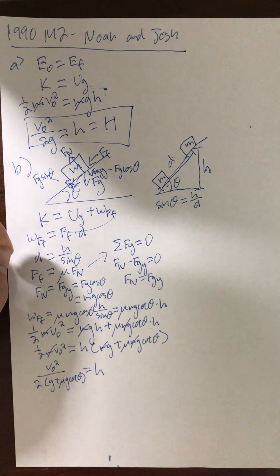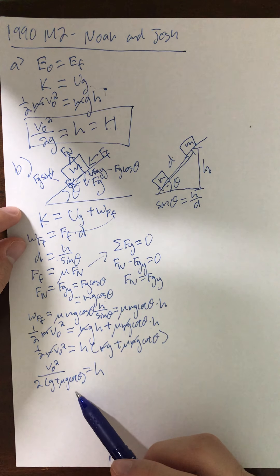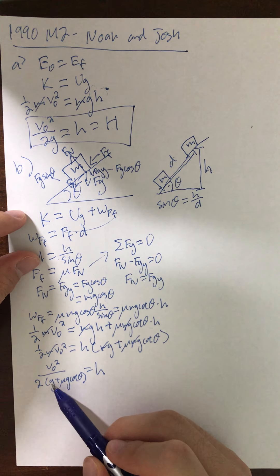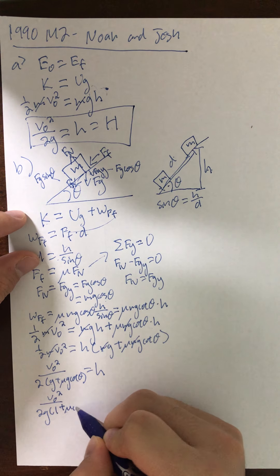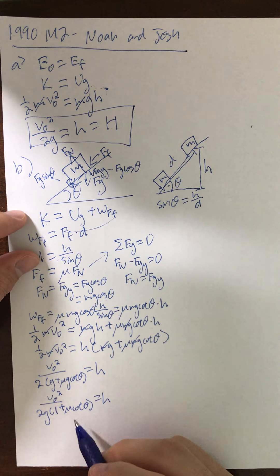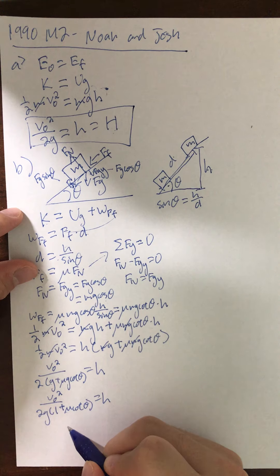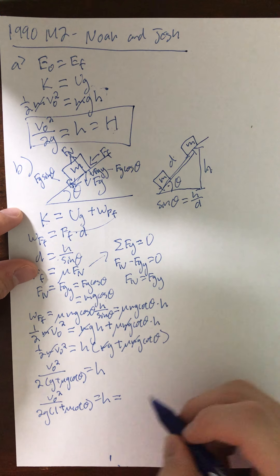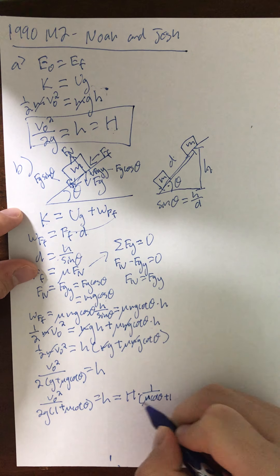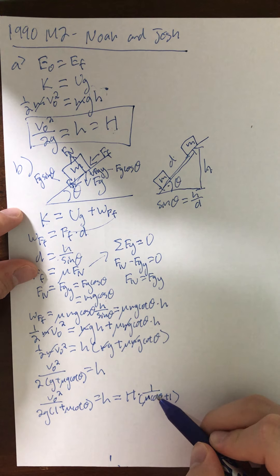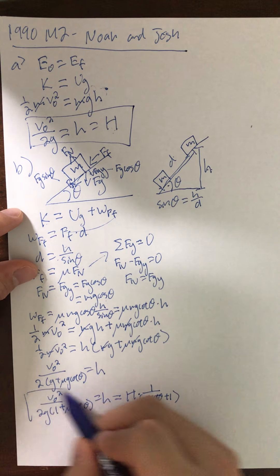Now we're trying to define everything in terms of capital H, which we defined as v-initial squared over 2g. Factoring out g from the denominator, we get v-initial squared over 2g times one over (1 plus mu cotangent theta) equals h. Since v-initial squared over 2g is capital H, this simplifies to h equals H over (1 plus mu cotangent theta). That's the second part.